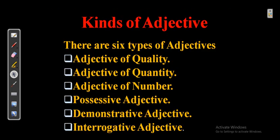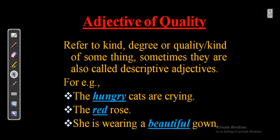There are six types of adjectives: adjective of quality, adjective of quantity, adjective of number, possessive adjective, demonstrative adjective, and interrogative adjective. Let us first go to adjective of quality. Adjective of quality refers to the kind, degree, or quality of something. Sometimes they are also called descriptive adjectives.